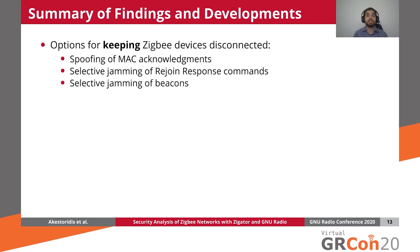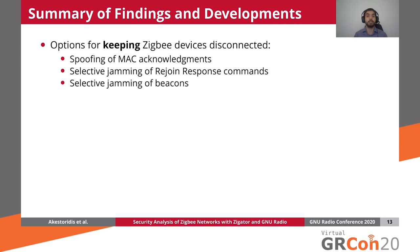Alternatively, the attacker could selectively jam rejoin response commands, which we also realized can be identified despite the use of encryption. By selectively jamming them, the devices keep retrying to join the network and never complete that process successfully. However, we observed that some of our devices, even when they failed to receive their rejoin response because of our selective jamming, still succeeded in joining their networks. The third option, which worked for all of our Zigbee devices, was to selectively jam the beacons that contained the new PAN ID value — in that way, the devices never learned the new PAN ID value and never initiated the rejoin process at all.